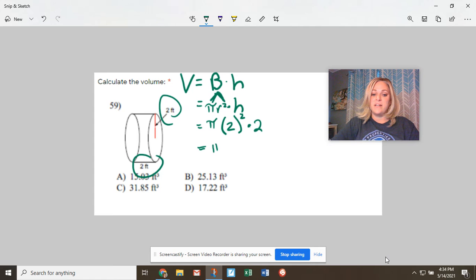So work on those exponents first. 2 squared is 4 times 2. So then you can multiply these two numerical values right there, 8 pi.